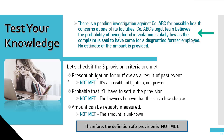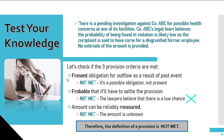Let's say there is a pending investigation against company ABC for possible health concerns at one of its facilities. The legal team at company ABC believes that the probability of being found in violation is likely low, as the complaint is said to have come from a disgruntled former employee. No estimate of the amount is provided. First, it would be best to check if the three provision criteria are met: whether the present obligation for outflow as a result of past events is met — in this case it is not, as it's a possible obligation but not yet currently obligating the company. Whether it's probable that it will settle the provision is also not met, as the legal team believes this is a low chance and the legal team is considered a reliable source. Whether the amount can be reliably measured is also not met as the amount is unknown at this time.